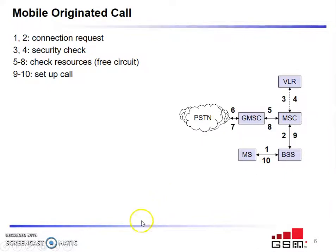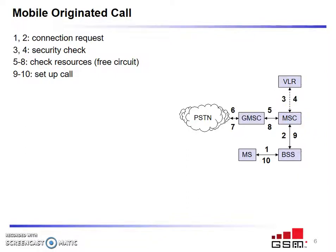Next we move on to the mobile originated call, where a mobile station is originating the call. The mobile station communicates with the BSS to communicate with an end station. The BSS communicates the information to the MSC. The MSC again communicates with the VLR to obtain information about the mobile station. That information is then transmitted to the gateway MSC, which is the point of communication to the outside network PSTN. This is the mobile originated call.